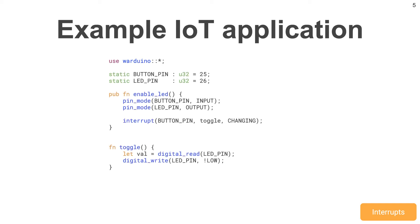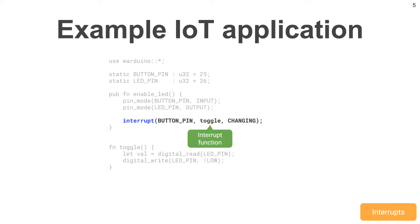But many digital pins on embedded devices support both input and output. That is why we need to first set the correct mode for each of the pins involved before we can read and write to them. This is done in the enable LED function. After the correct modes are set, we can register our toggle function to be called whenever the value of the button changes.